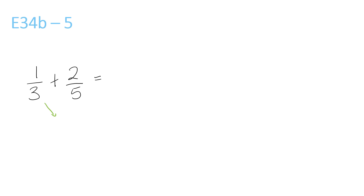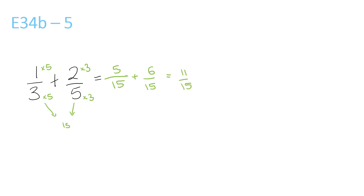3 and 5 both go into 15 again. 3 times 5 is 15, so we know the bottom number is 15. So we have to times the top number by 5. And 5 times 3 is 15, so we have to times the top number by 3 as well, to get 2 times 3, which is 6, over 15. Now the bottom numbers are the same, we can add them. 5 plus 6 is 11 over 15, which stays the same.